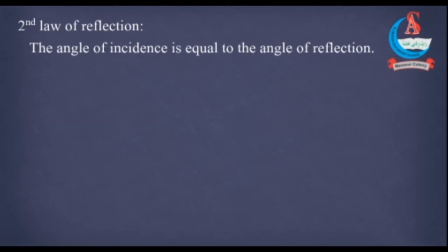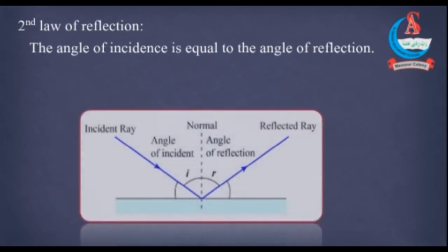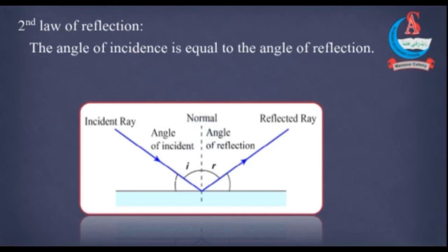To second law ko samajhne ke liye, Hame angle of incidence or angle of reflection ka maalong hoona zaaruri hai. Angle of incidence kya hai? Incident ray aur normal ki dhermiyan jho angle mawajud hai, Voh angle of incidence kailata hai.